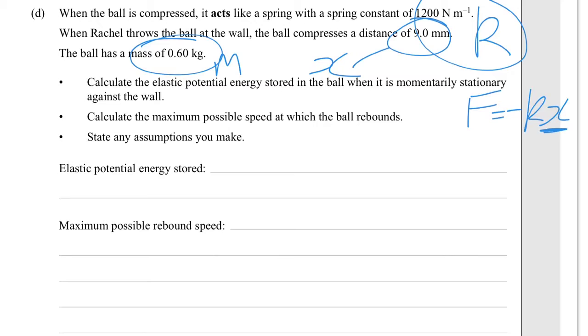That's just the formula. EP equals half KX squared. You've got X given to you. You've got K given to you. You can just plug those numbers and calculate it. Your units will be in joules, capital J.